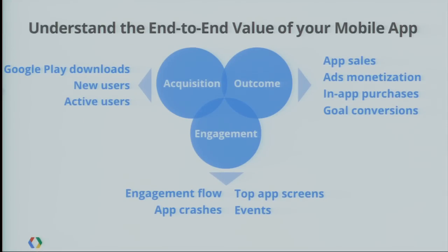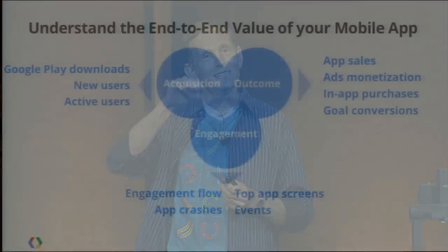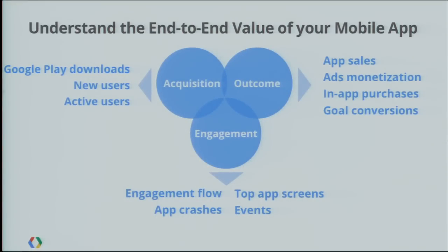So that's acquisition — where do users come from — and engagement — what do they do when they get there. And then outcome. One outcome is certainly monetization: what sales do you have of your application, what ad revenue, what in-app purchases? You can look at that information and slice it by country or various other dimensions. We also have the idea of goal conversions: you can set up a goal of reaching a particular screen or having some particular event happen, and see how users get to that conversion.